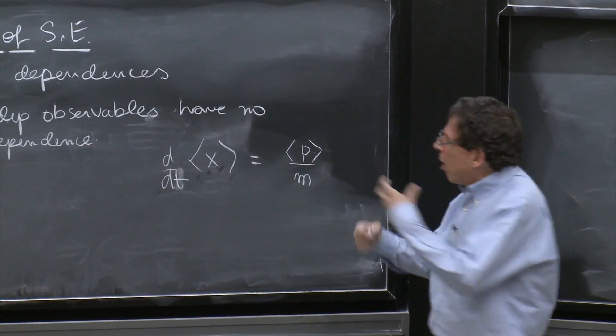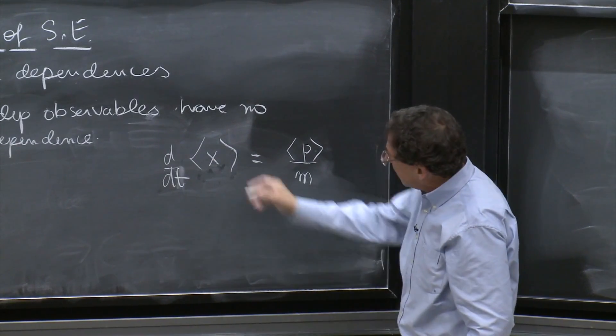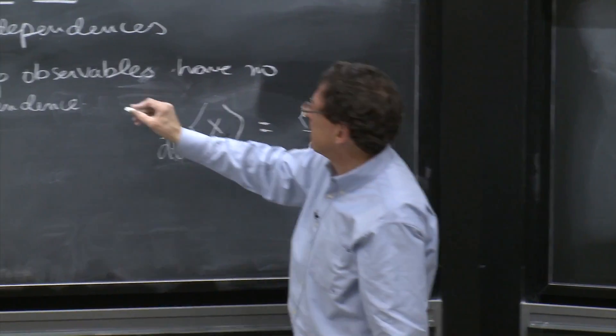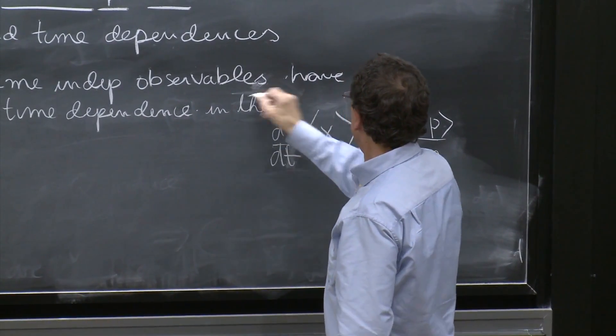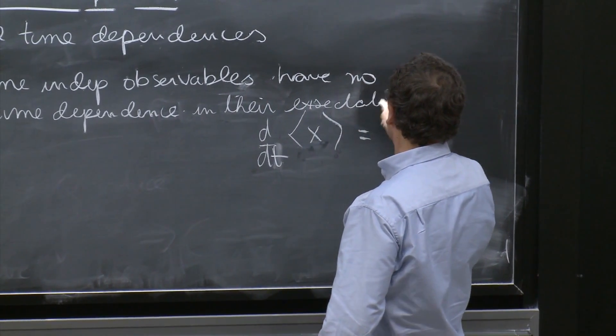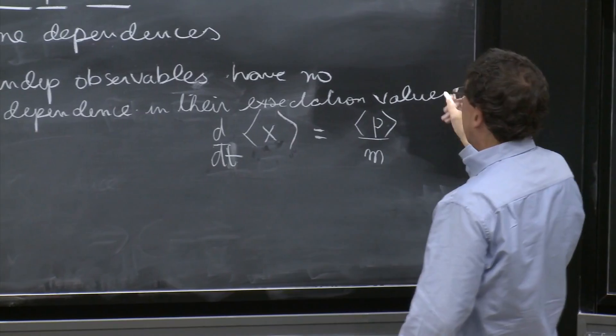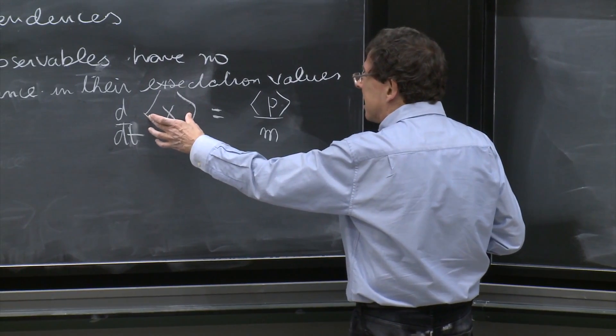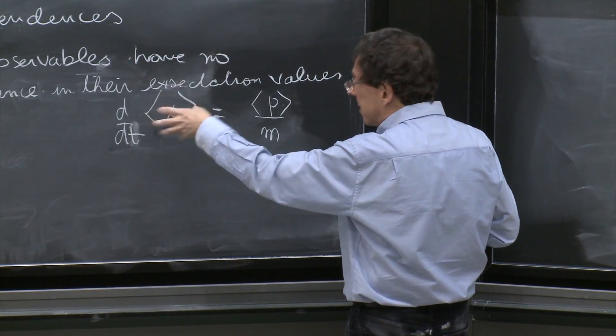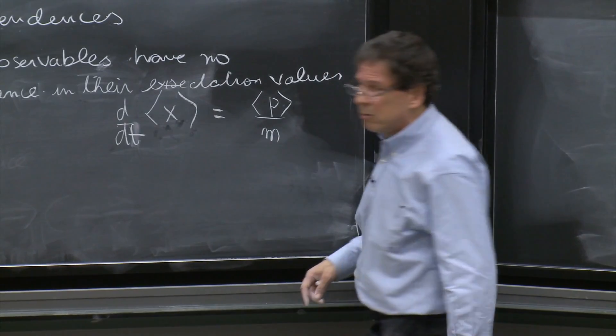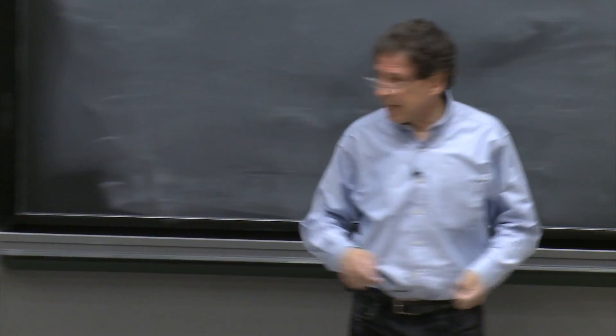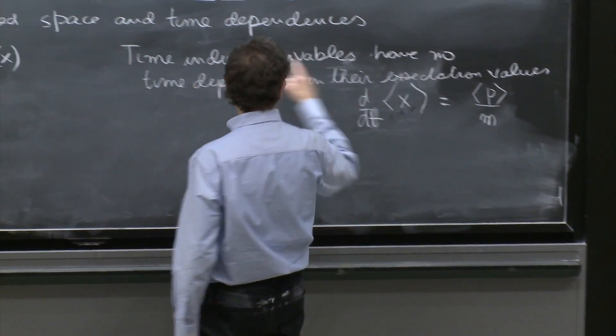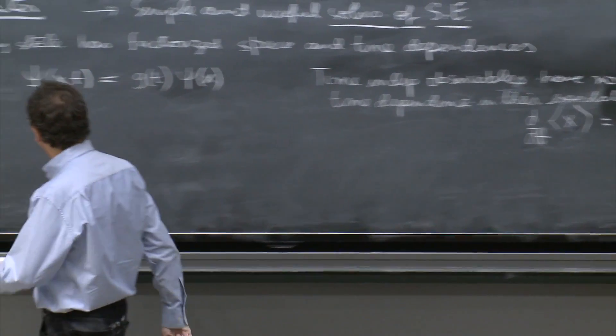So the observable is time-independent, but the expectation values have no time dependence in their expectation values. The time dependence comes from the states. The states of psi of x and t have time dependence, and sometimes it just doesn't drop out. But for stationary states, it will drop out.